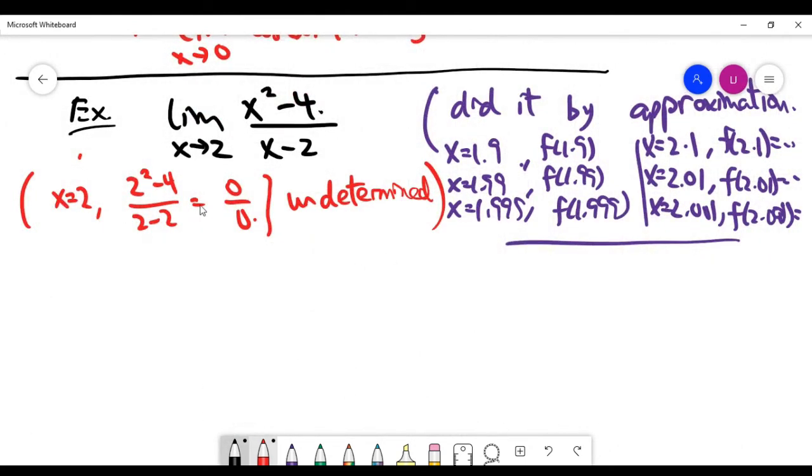Now the problem is like this: if we do it by approximation we actually get the answer. On this video we made a good guess that it is approaching 4, but we can do it another way - alternatively.